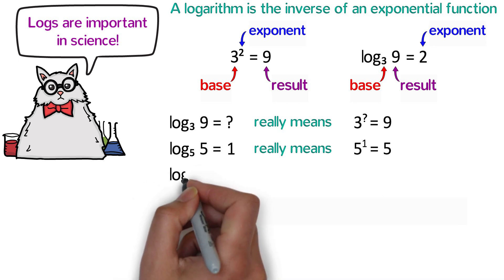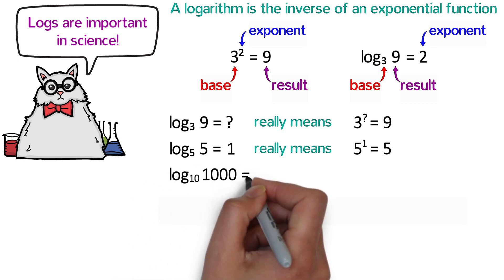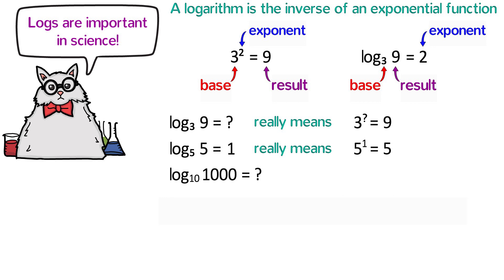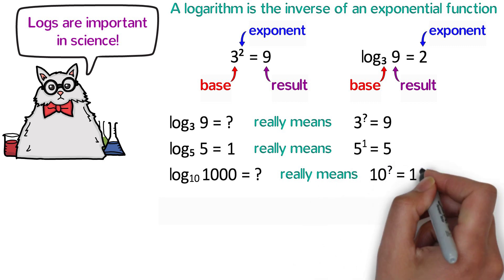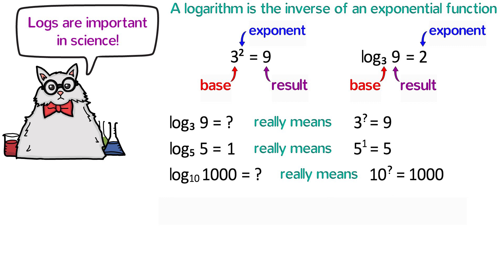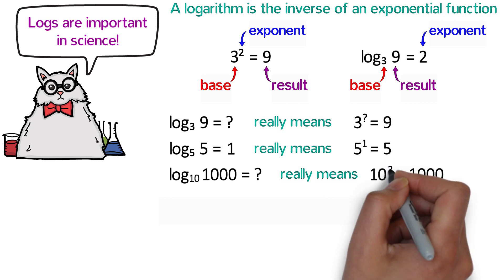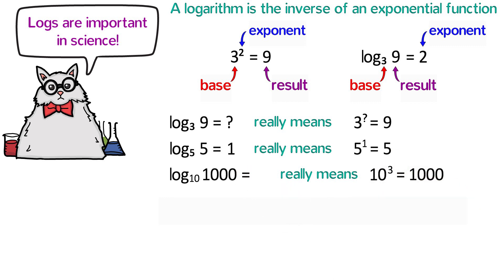How about this? What is log base 10 of 1,000? Pause the video and try to figure it out. Remember that this question is really asking 10 to what power is 1,000? Once you realize that, we know that 10 to the third power is 1,000, so the answer is 3.